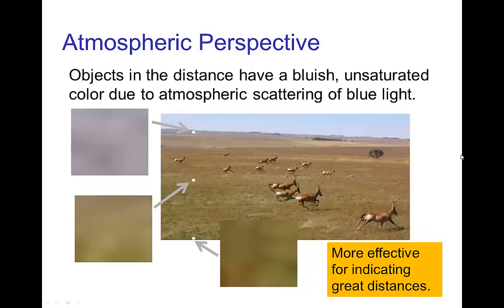Yet another visual cue for depth is atmospheric perspective. This is mostly effective for indicating large distances. In this landscape, the parts of the field which are closer to us are more saturated, and the color desaturates into the distance, acquiring more of a bluish tint.